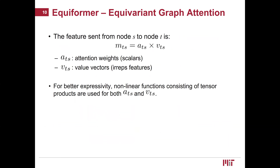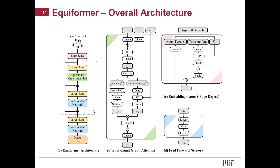Finally, we improve the expressivity of typical dot product attention with equivariant graph attention. This is based on the observation that in attention, the feature messages sent from source node to target node can be formulated as the product of attention weights and value vectors. For better expressivity, we use non-linear functions consisting of tensor products to generate both attention weights and value vectors. With these three modifications, we convert typical transformers into Equiformer. After processing the input 3D graph with many Equiformer blocks, we perform global sum aggregation to predict energy and use irreps features at each node to predict forces acting on each atom.